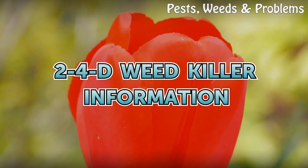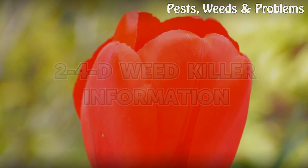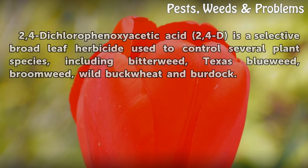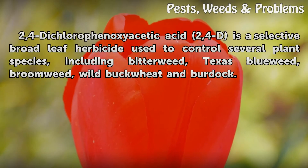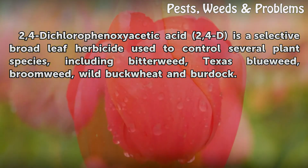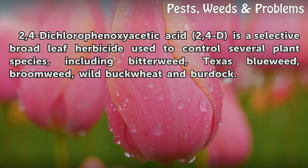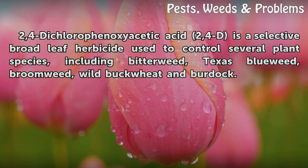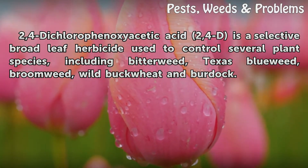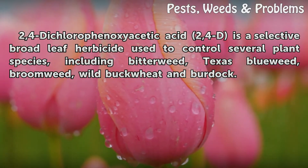2,4-D Weed Killer Information. 2,4-D (Chlorophenoxyacetic Acid) is a selective broadleaf herbicide used to control several plant species, including bitter wheat, Texas blue wheat, broom wheat, wild buckwheat, and burdock.